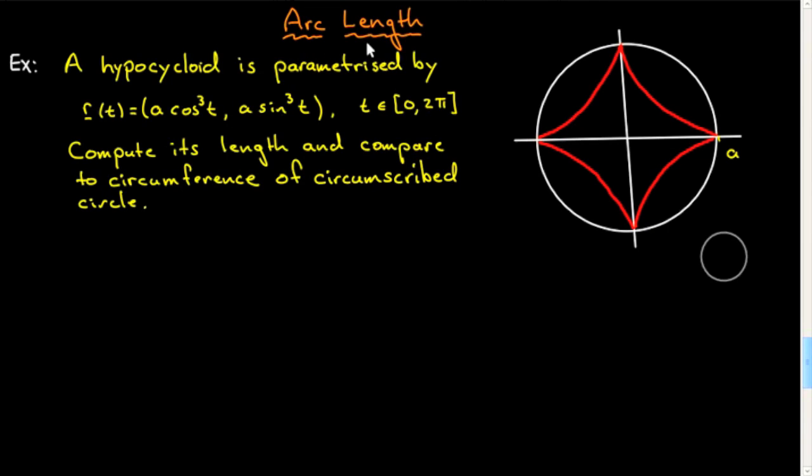This will be the second of my examples on computing arc length. In this case I've chosen a much richer example. Here's the question. A hypocycloid is parameterized by C(t) = (a cos³t, a sin³t), t ∈ [0, 2π]. Compute the length and compare with the circumference of the circumscribed circle.